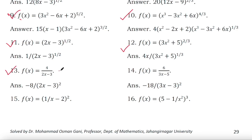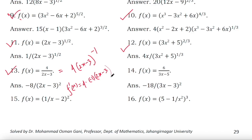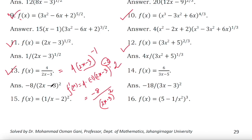Let me solve example 13. You can simplify it first: f(x) = 4(2x − 3)^(−1). Now differentiate: f'(x) = 4 × (−1)(2x − 3)^(−2) × derivative of (2x − 3), which is 2. This gives −4 × 2 × (2x − 3)^(−2) = −8/(2x − 3)². Since the power is negative we place (2x−3)² in the denominator. This is the answer.